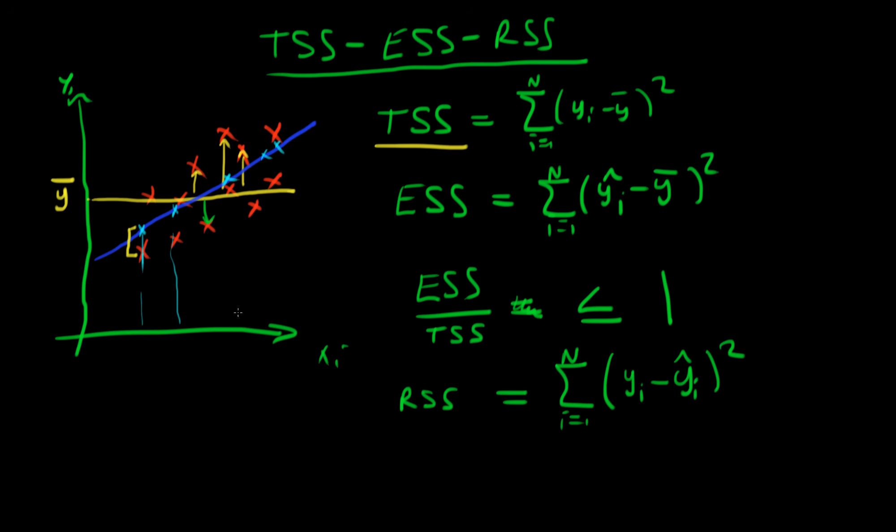And actually, although we won't prove it in this video, it turns out that intuitively the total sum of squares is made up of that which is explained by your model, the explained sum of squares, plus the residual sum of squares.